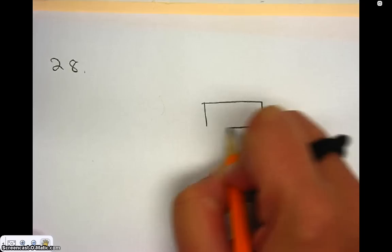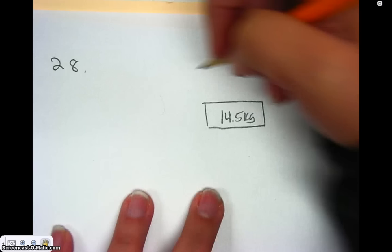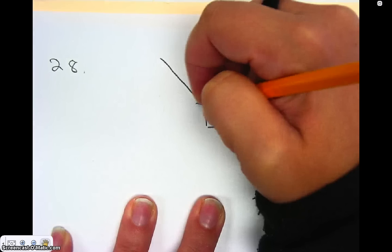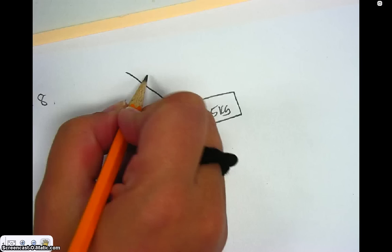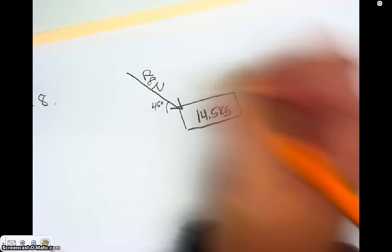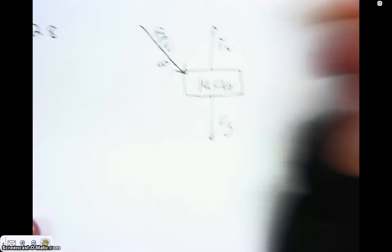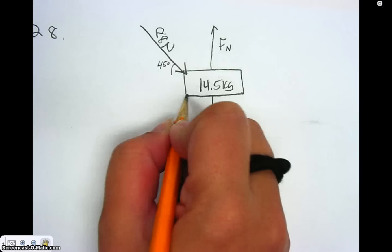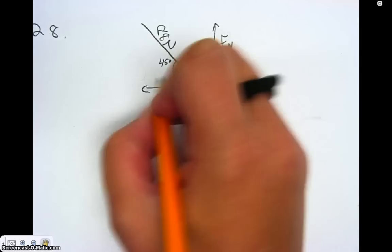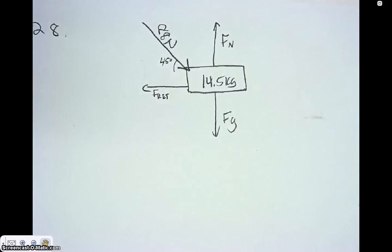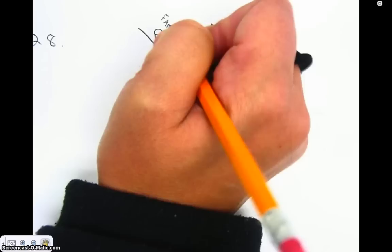So the free body diagram is going to look like this. I have my lawnmower, which is 14.5 kilograms. I have a force going in this direction — forces are vectors, so make sure you are always drawing arrows — 88 newtons at an angle of 45 degrees. There is gravity acting on it, there is a normal force, and because we're pushing a lawnmower along some grass, there's a retarding force going in the opposite direction — really the frictional force. That is the free body diagram.